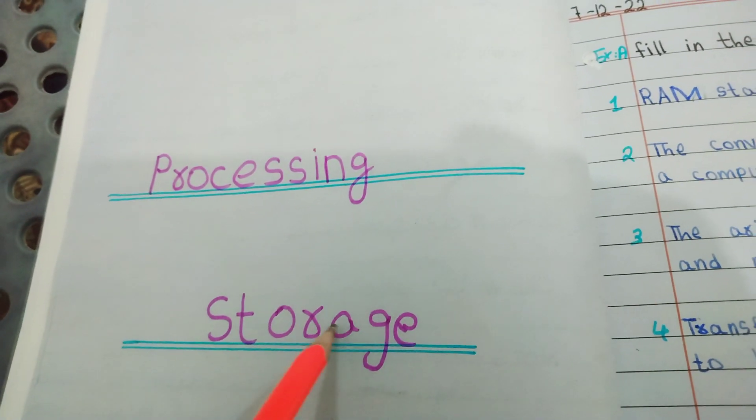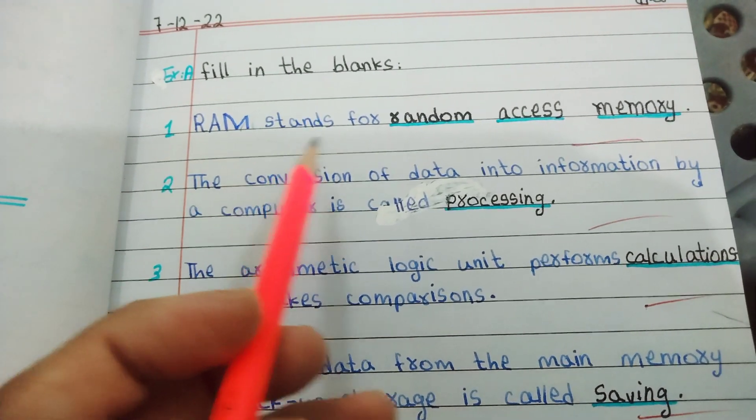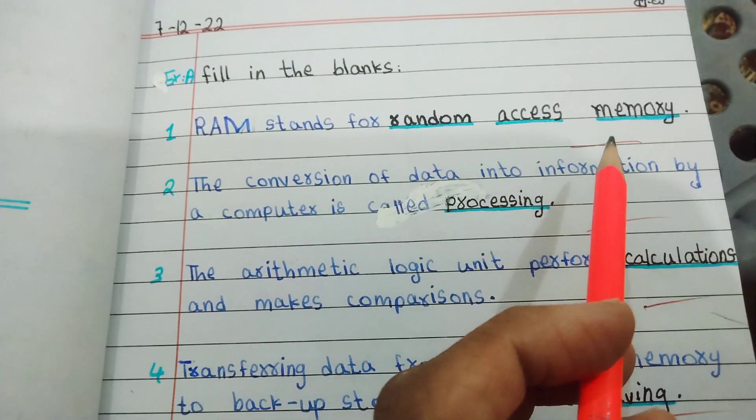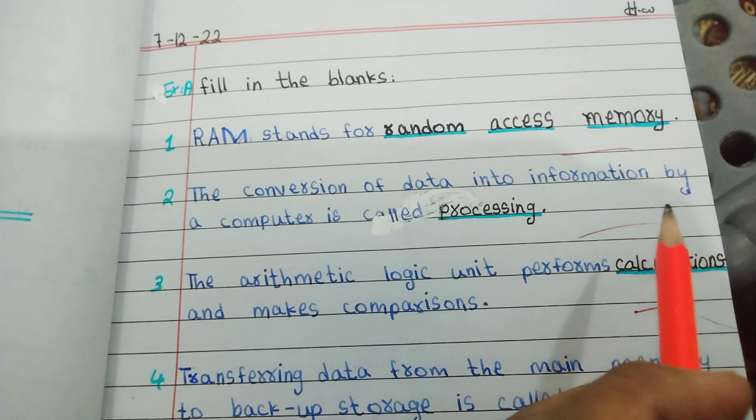Chapter: Processing Storage. Fill in the blanks. RAM stands for random access memory. The conversion of data into information by a computer is called processing.